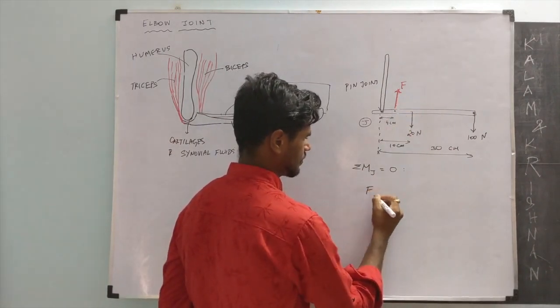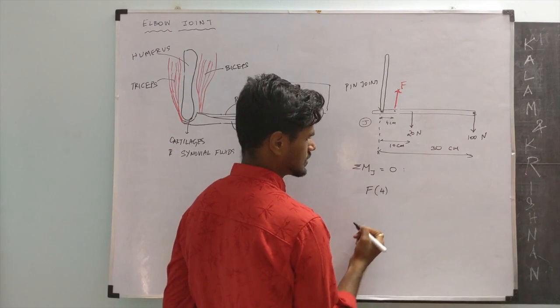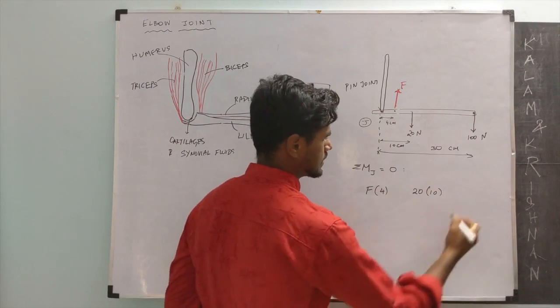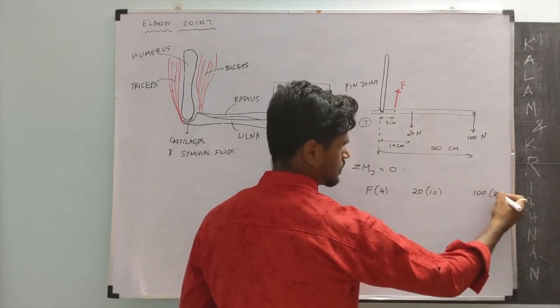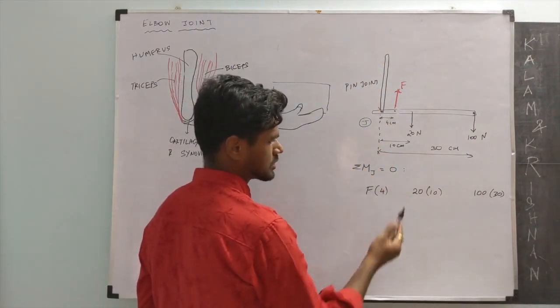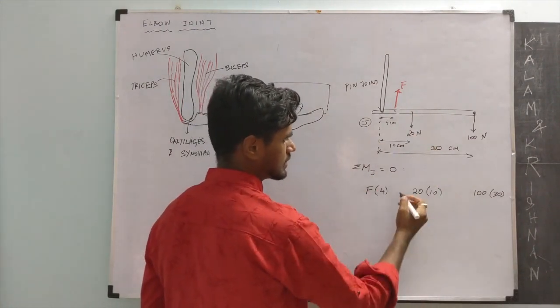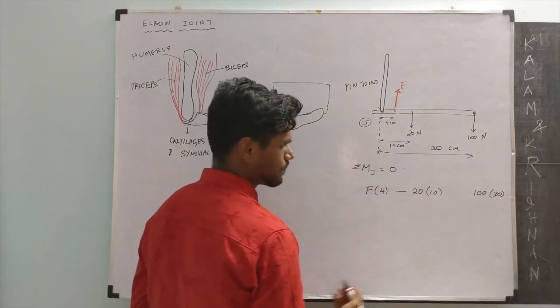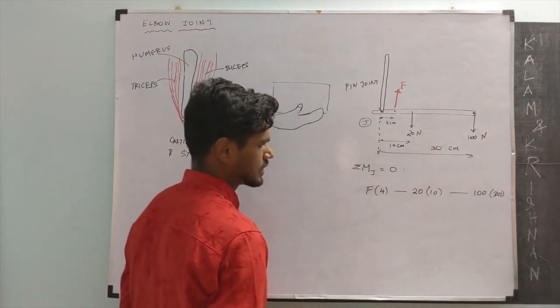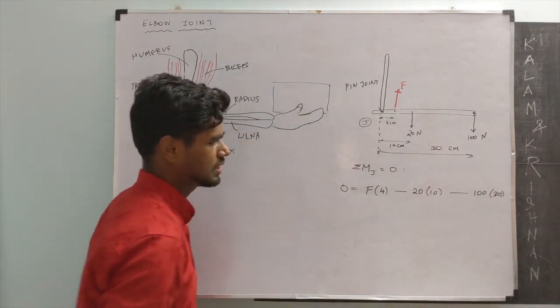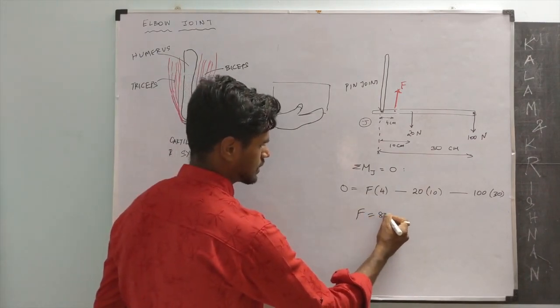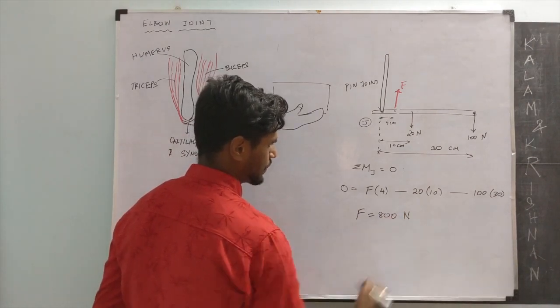We have force F times its moment arm 4 centimeters, weight 20 times its moment arm 10 centimeters, and 100 times its moment arm 30 centimeters. F times 4 is in the counterclockwise direction, say it's positive. 20 times 10 is in the clockwise direction, it's negative. 100 times 30 is in the clockwise direction, so again it's negative. Sum of all this should be 0. That's the moment equation. From this equation, we can calculate the force to be 800 newtons.